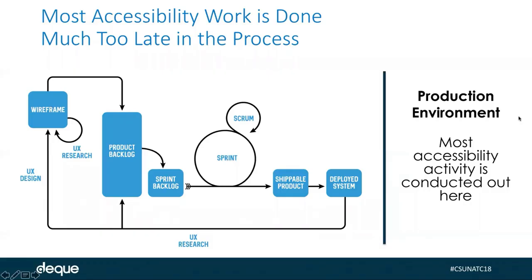Just for a little bit of context — historically, accessibility testing has been something that kind of happened after a digital property is put together. Most accessibility activity is conducted at the end of the life cycle. We're looking at a slide showing an agile-ish development process, and accessibility is placed all the way to the right of that development process or timeline.